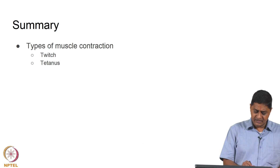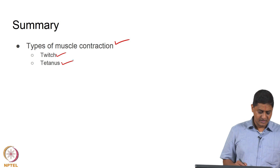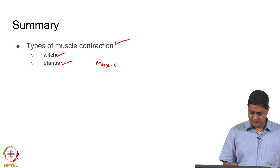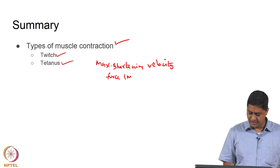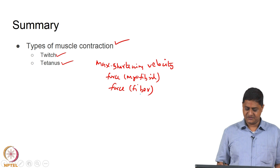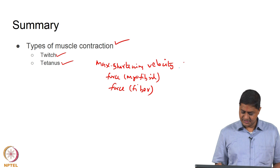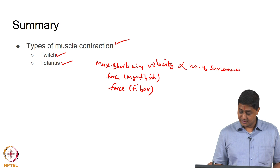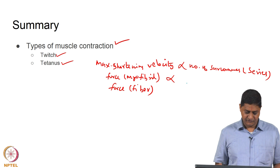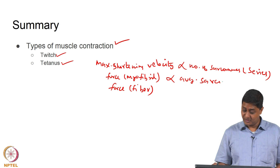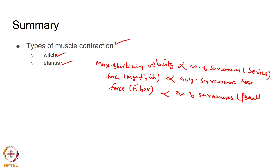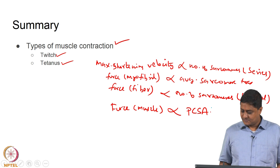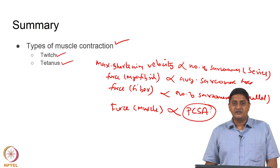In summary, we have seen types of muscle contractions — twitch and smooth tetanus — and the details of what influences maximum shortening velocity and the force of a myofibril and fiber. Maximum shortening velocity is proportional to the number of sarcomeres in series; force of a myofibril is proportional to the average sarcomere force, not the number of sarcomeres; and force of a muscle is proportional to its physiological cross-sectional area. With this we come to the end of the lecture. Thank you very much for your attention.